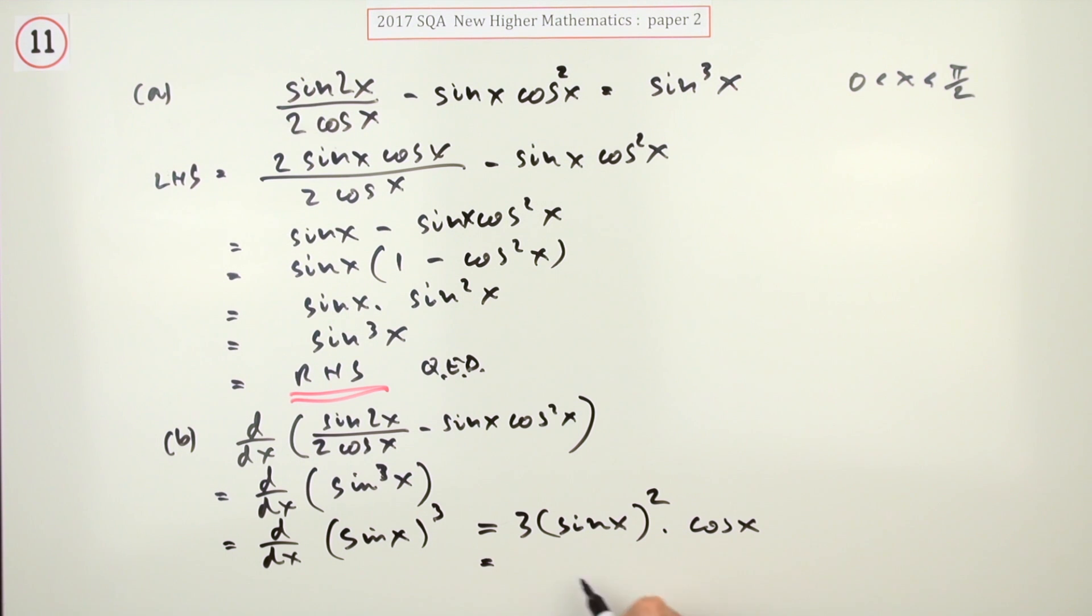So, tidying that up, there's not a lot you can do. You've got three, maybe you could put that first, so you've got the square term at the end. Three cos times, and that's sine squared x.